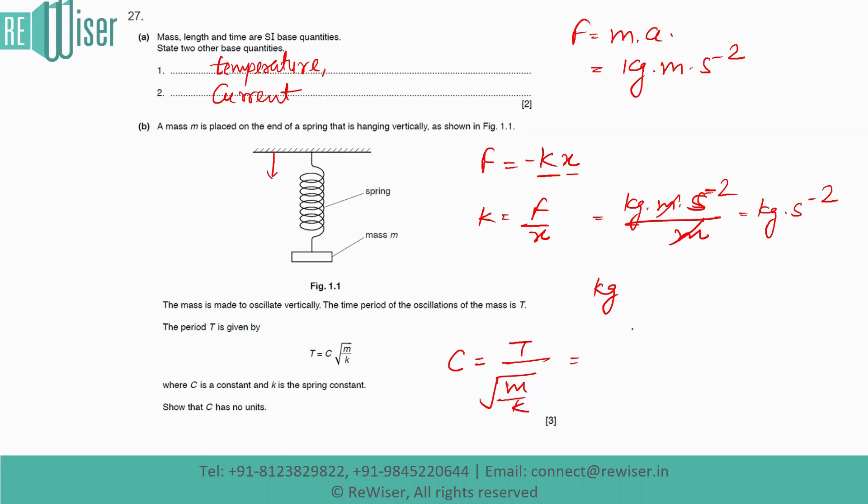So T has units of time period, so it will be seconds upon √M. So M is basically mass kilogram, and K is kg·s⁻². So kilogram kilogram will cancel out. So it will be s upon √(1/s⁻²). So under root of s⁻² will be only s⁻¹. So that means s upon 1 upon s⁻¹.